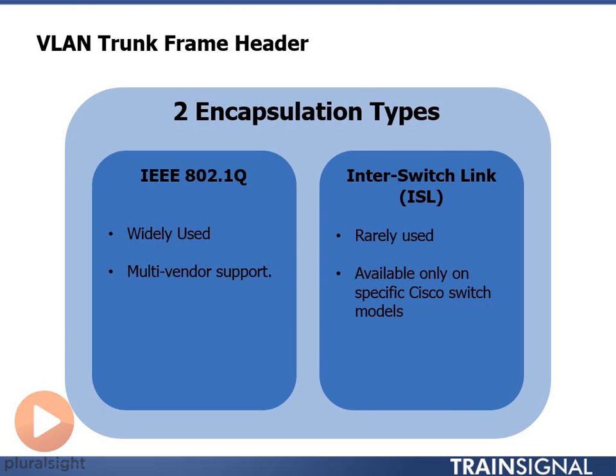We don't really use ISL very much. Some switches, though, will require you to specify which trunk encapsulation type you want to use on that link. So if your switch supports multiple trunk encapsulation types — both .1q and ISL — you'll have to choose which one. Most likely we're going to choose .1q, and we actually have to manually specify that in our configuration.